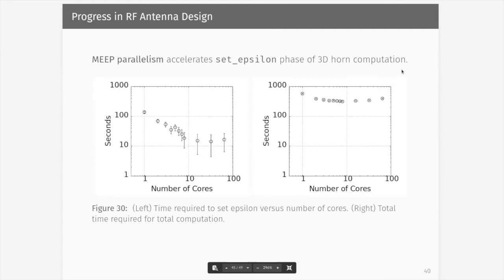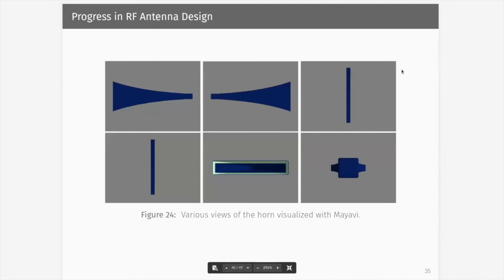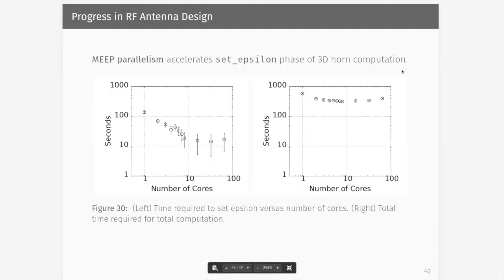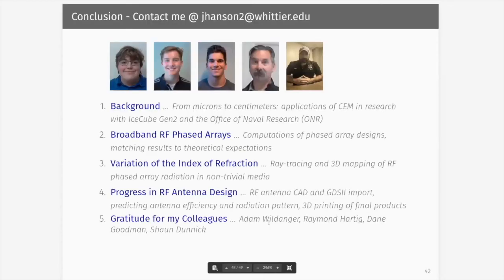Also, I did want to mention that MEEP parallelism does accelerate this process. So this is a plot that I generated this week to try to figure out just how my 128 core desktop here can actually speed up the process. And it turns out that most of the acceleration comes from the set epsilon function, so if I add cores to that, setting it up is most of the acceleration and then running it and doing the near to far field projection. There's some acceleration, but it's not as much as what you get from the set epsilon. So I think that might be 45 minutes. So let me just say thank you to my students. These are all undergraduate students that work with me, and Sean is my lab tech. Adam, Ray, and Dane are my students, and Sean was very helpful in getting the 3D printer fixed and up and running.